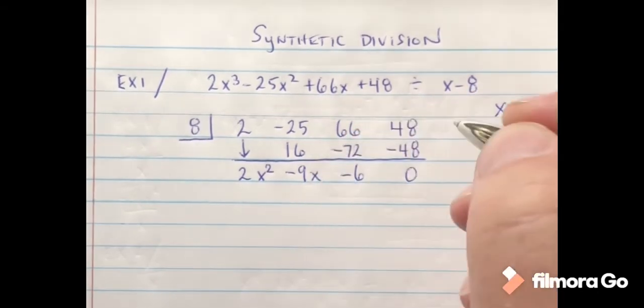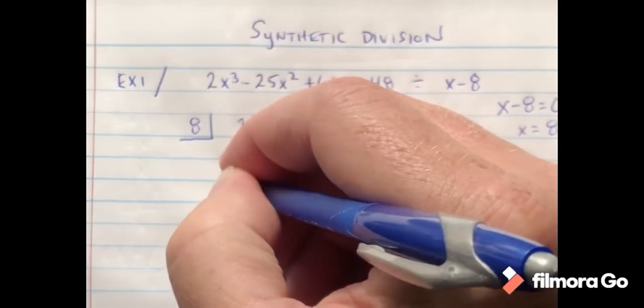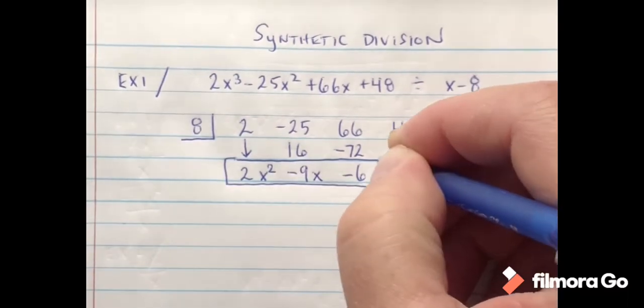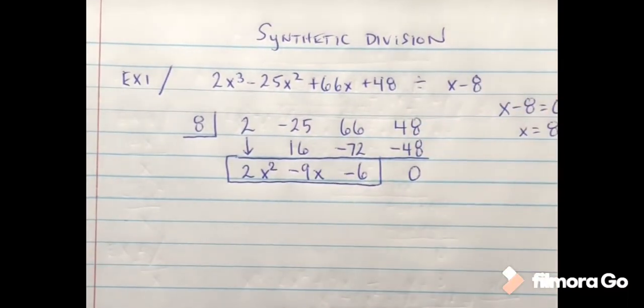And then I'm just going to go down by one each time. So x and then minus 6. So my answer would be 2x to the second minus 9x minus 6.